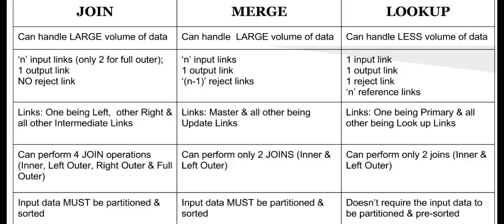For example, say the cache memory is only 10 MB and each additional disk file is 20 MB. If there are five additional disk files, the Lookup stage needs to look up across five different files of 20 MB each. That's pretty huge for Lookup, and that's why performance issues occur.